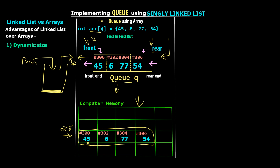Whenever one element is removed, the front is incremented. Whenever one element is added, the rear is incremented. If we add one more element 66, the rear will now point to 66. Whenever we remove 45, the front moves forward to 6. The basic linear queue has some issues, which is why we also have the circular queue, also covered in this DSA course. Now let's move on to queue using linked list, to see how queue can be implemented using a singly linked list.